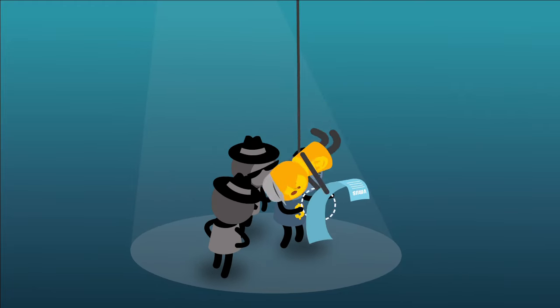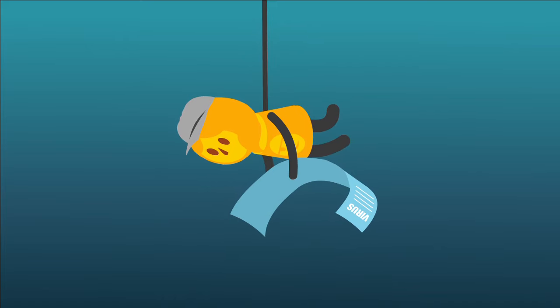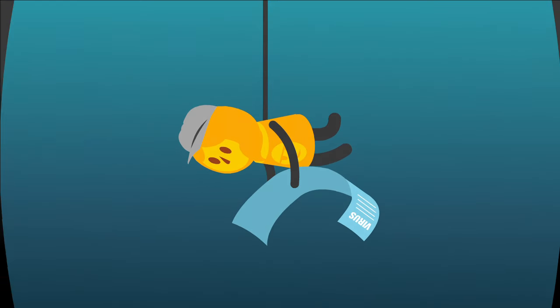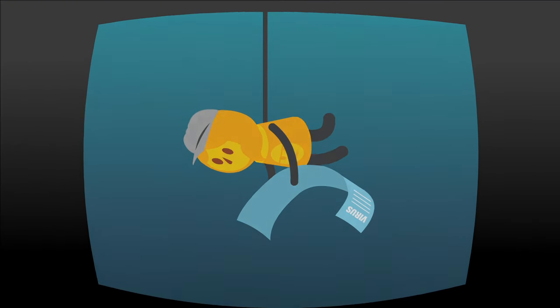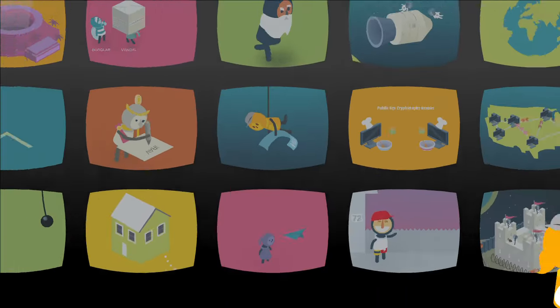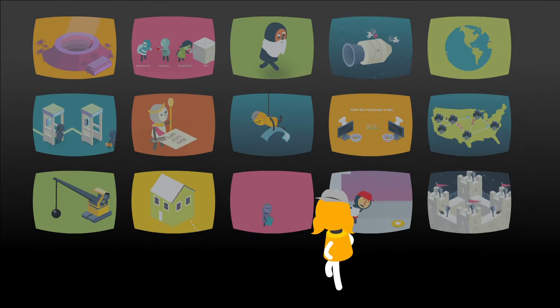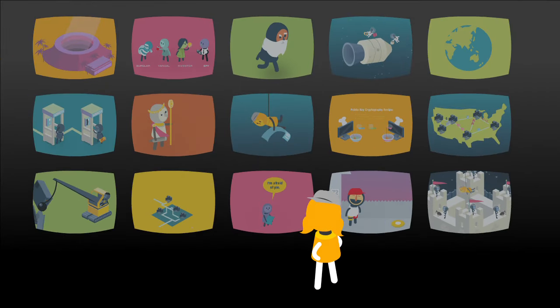There are also hackers who operate in morally gray areas, who might steal information to expose corruption, or violate privacy in the name of national security. They consider what they're doing just and for the greater good, while others see their actions as dishonorable and wrong.